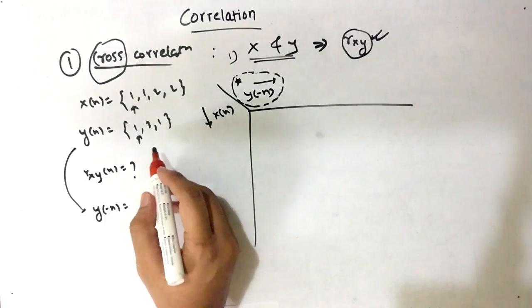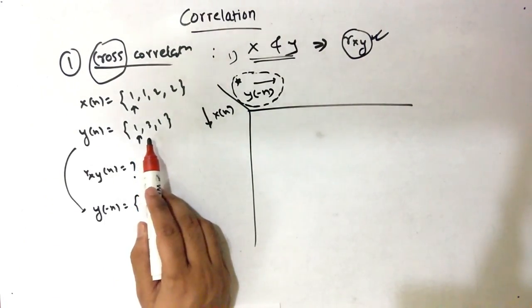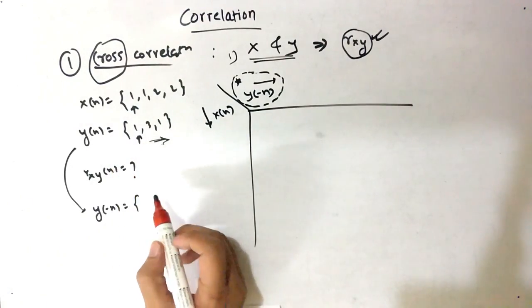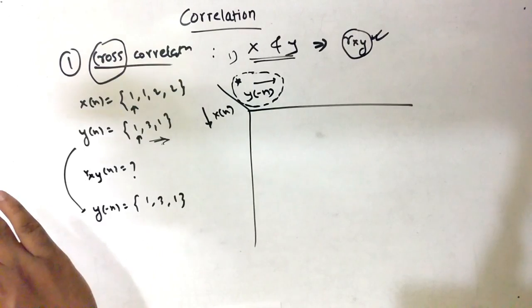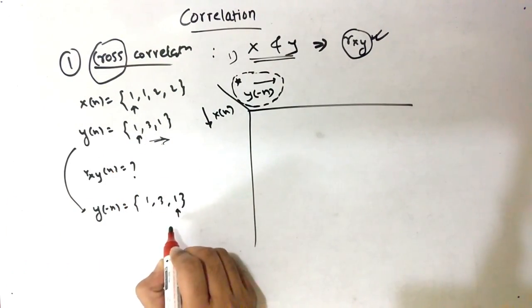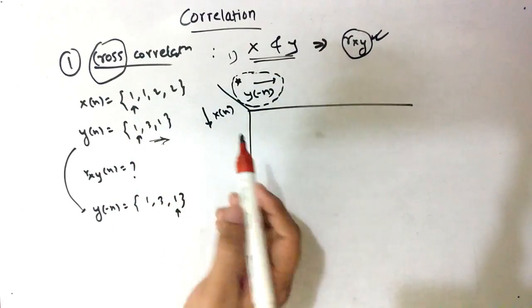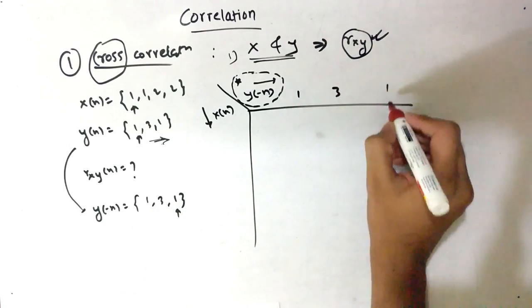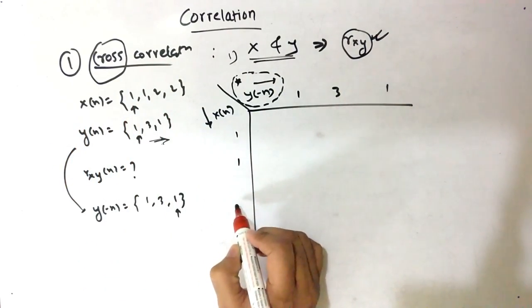So let's solve what Y(-n) is. It means we have to take the mirror of Y(n). This means it is on the positive side originally — the mirror will be on the negative side. So values remain the same: 1, 3, 1, but the axis changes — we had Y(1), Y(2), but now we have Y(-1) and Y(-2). So we write 1, 3, 1 in the Y(-n) direction, and for X(n) we have values 1, 1, 2, 2.